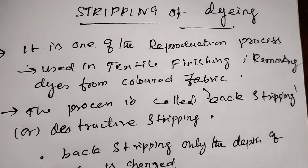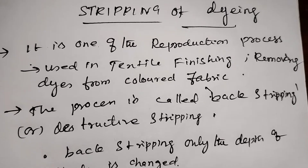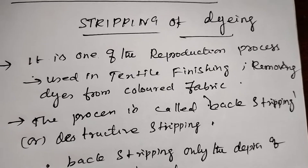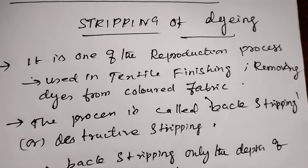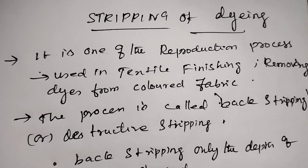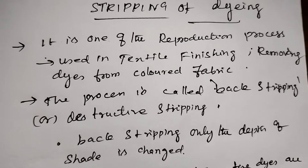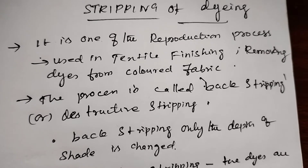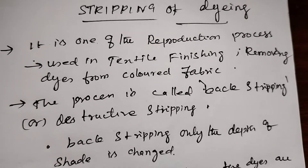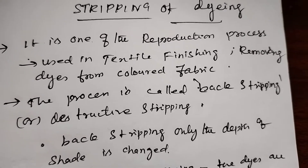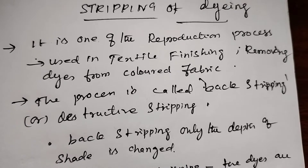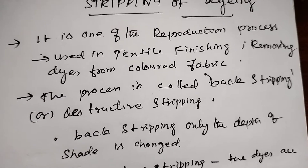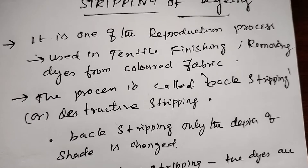So, we have finished textile. Now we remove the color. That is the stripping of dyeing. In the process, one is back stripping and the other one is destructive stripping.